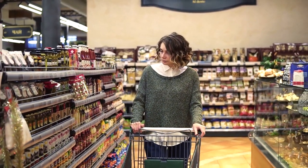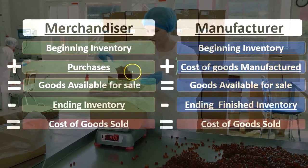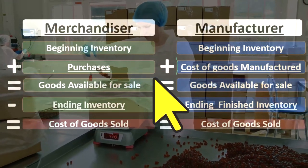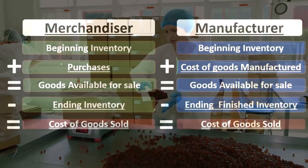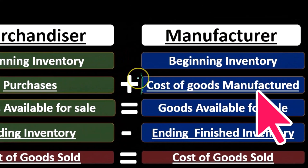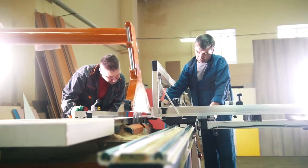This cost of goods manufactured number is what we need to determine. For a merchandiser, it's very easy to know what the purchases are because that's simply what was purchased — pretty straightforward. For the manufacturer, however, the cost of the goods we manufacture includes more than just what we purchase, more than just raw material. It also includes things such as direct labor and overhead.